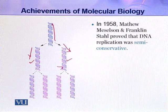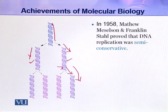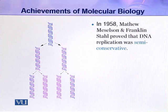This is called semi-conservative replication because one strand is conserved. In the next replication cycle, again one strand from the parent is conserved and the other strand is newly synthesized. This semi-conservative replication was described by Meselson and Stahl.